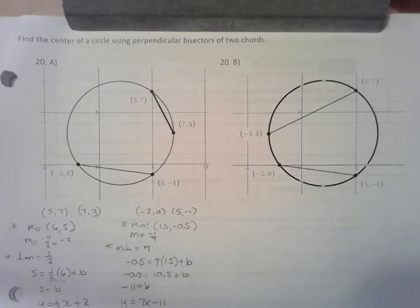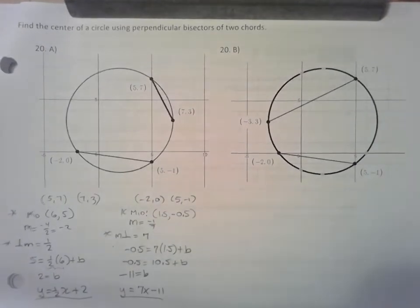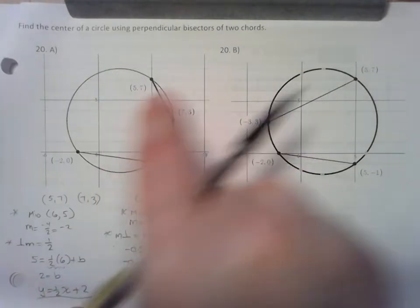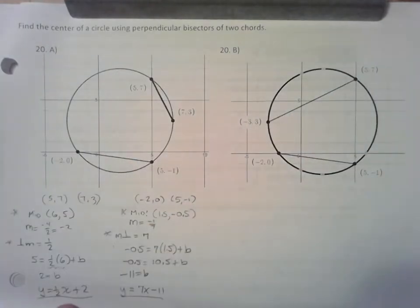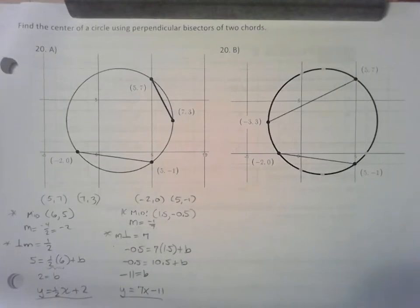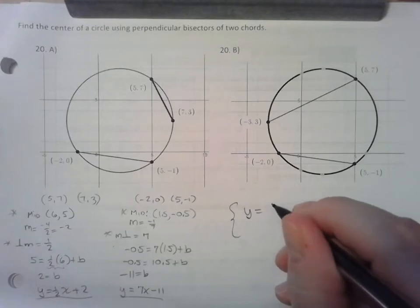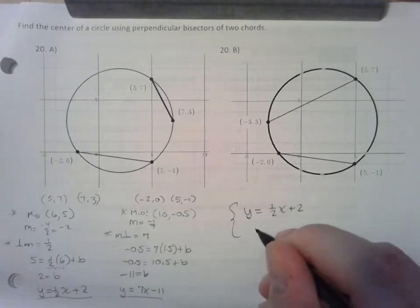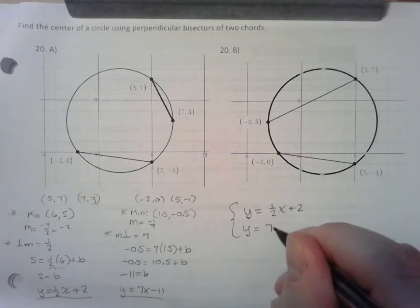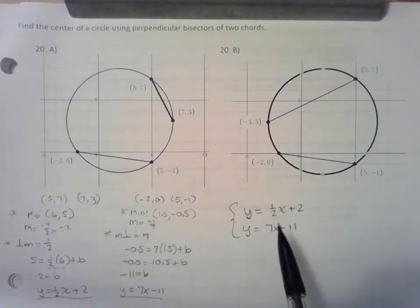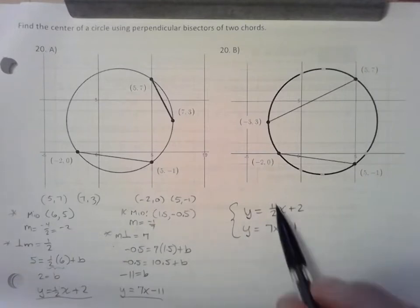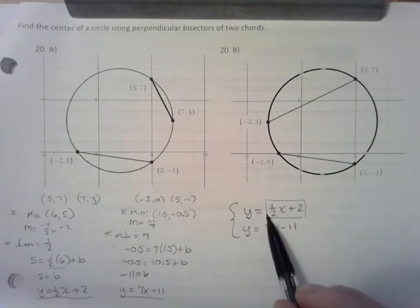Now here comes the fun part. These two equations are the equations for the perpendicular bisectors. But I want to find where they cross each other. What I next need to do is solve a system of equations using or containing these two equations. Since they are both in slope intercept form, I can use substitution. If 1 half X plus 2 equals Y and Y equals 7X minus 11, the transitive argument says that I can set this expression equal to the Y in the second equation. So I'm going to plug my first equation into my second equation.